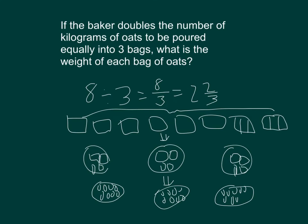For my check, take 2 and 2 thirds, plus 2 and 2 thirds, plus 2 and 2 thirds, which was 3 times 2 and 2 thirds. As repeated addition, 2 plus 2 plus 2 is 6, 2 thirds plus 2 thirds plus 2 thirds is 6 thirds. 6 thirds is equal to 2, so 6 and 2 is 8. So it does check, where each of the bags holds 2 and 2 thirds kilograms of oats.